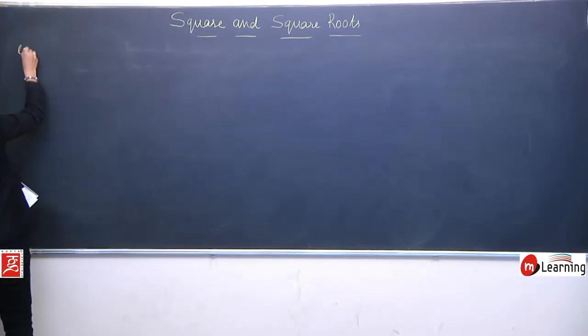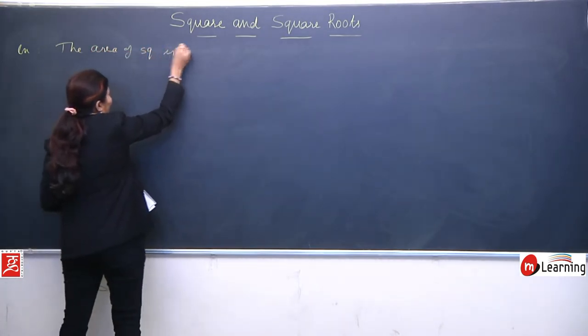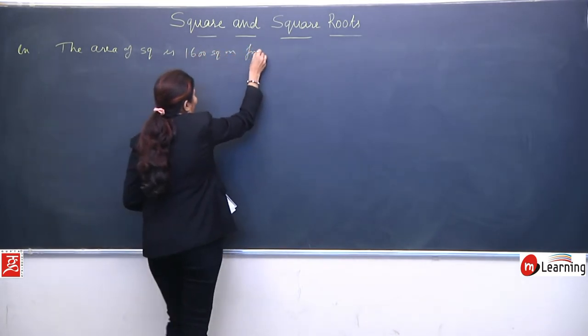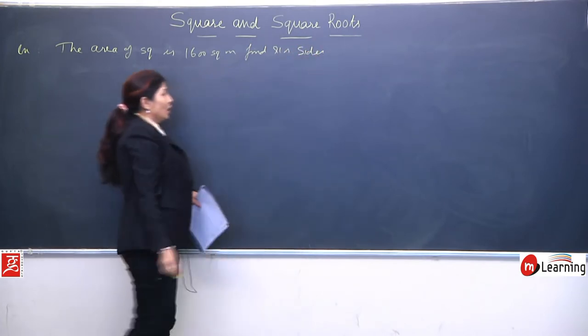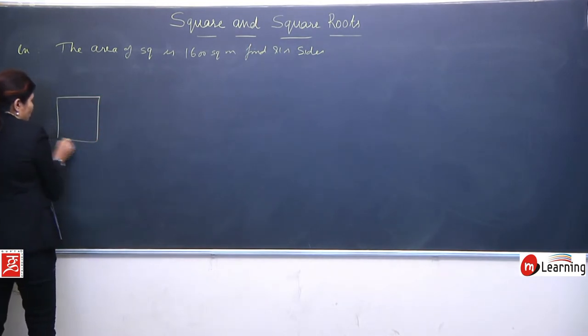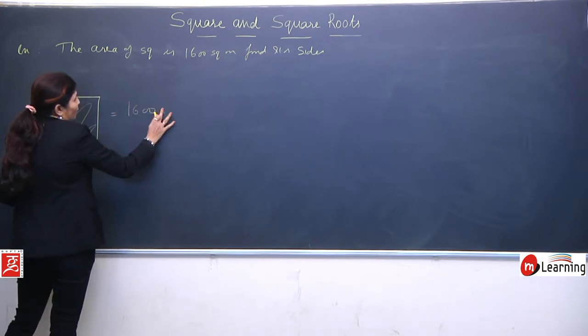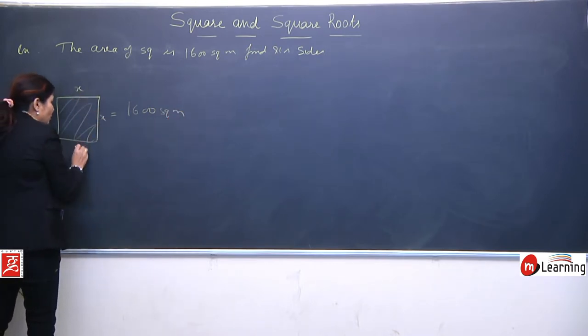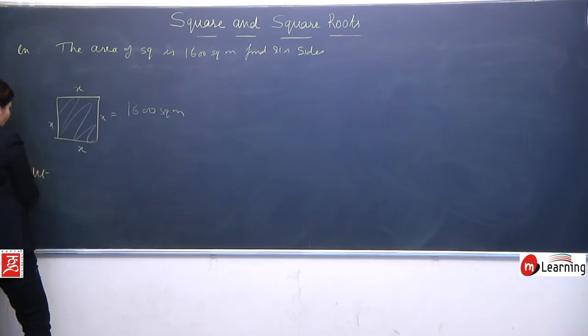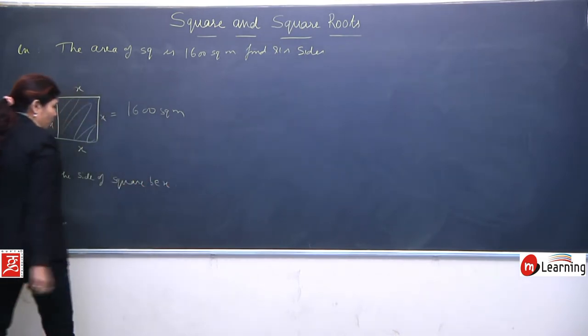Another example: The area of a square is 1600 square meters. Find its side. This is your square. Its total area is equal to 1600 square meters, and we need to find the side. So let's say side of the square is x.